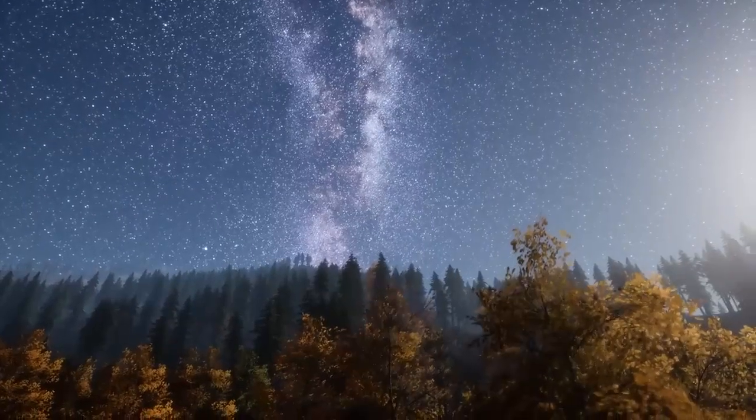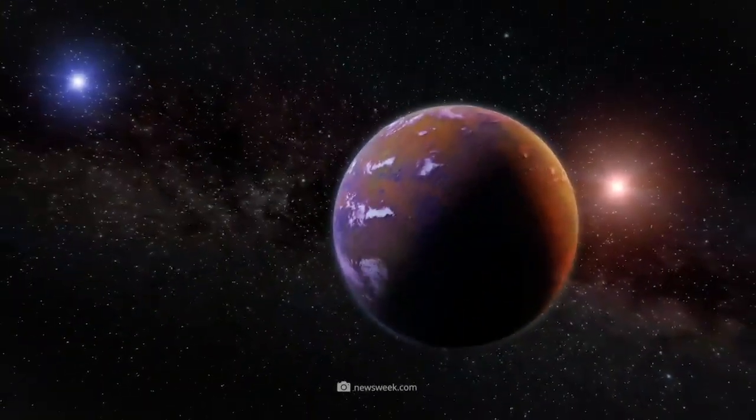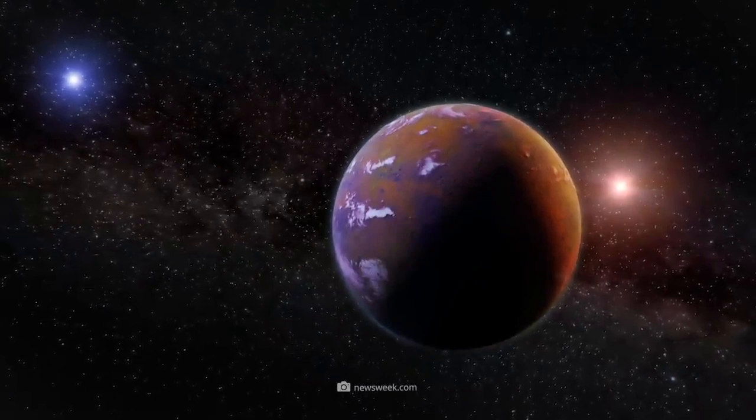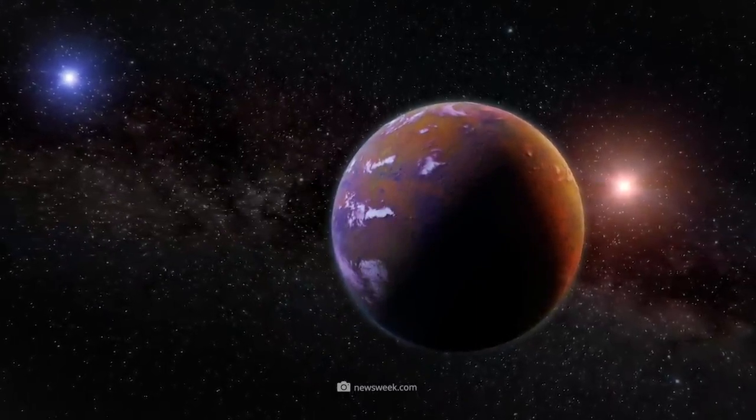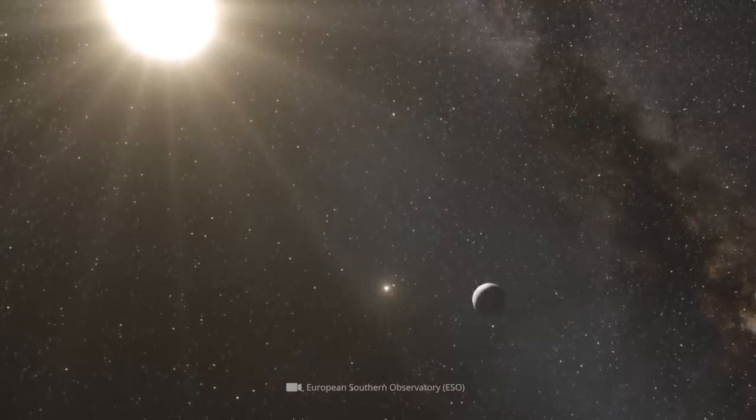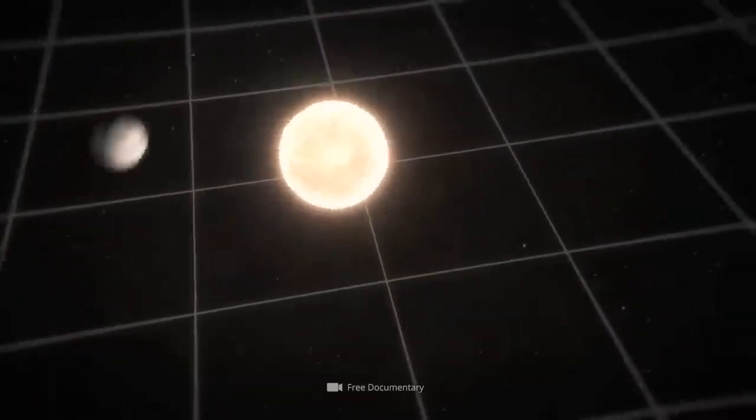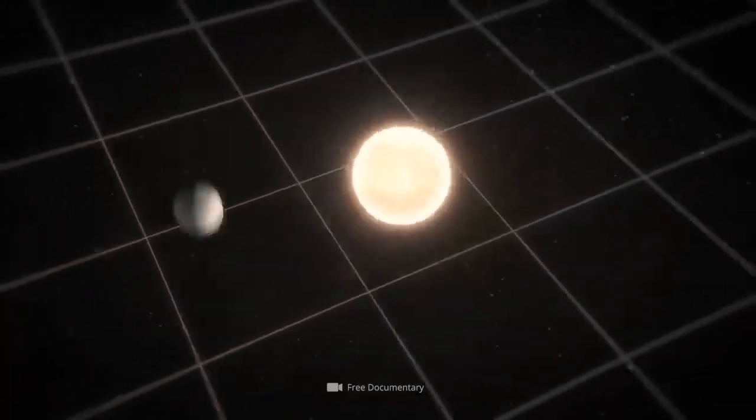However, things are somewhat different for our closest cosmic neighbor. No other exoplanet comes as close to our terrestrial home as Proxima Centauri B. Although there are just 4.2 light-years between us and this celestial body, its presence was only detected in the summer of 2016 using the radial velocity method.